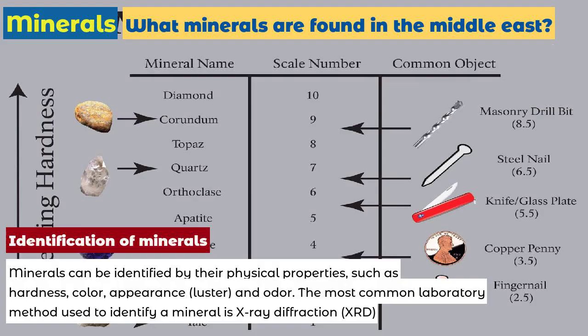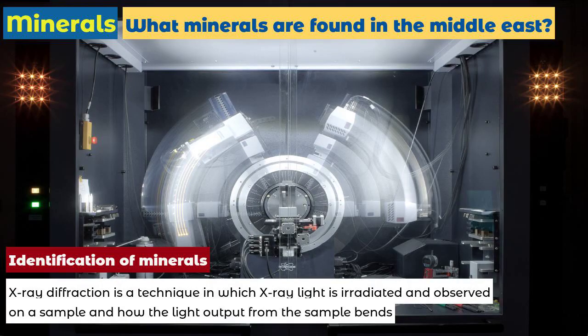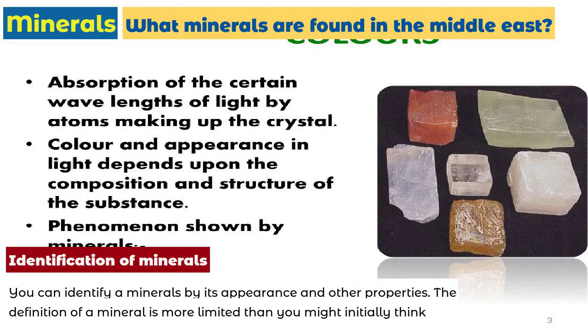Identification of minerals. Minerals can be identified by their physical properties, such as hardness, color, appearance, luster, and odor. The most common laboratory method used to identify a mineral is X-ray diffraction, XRD. X-ray diffraction is a technique in which X-ray light is irradiated and observed on a sample, and how the light output from the sample bends.